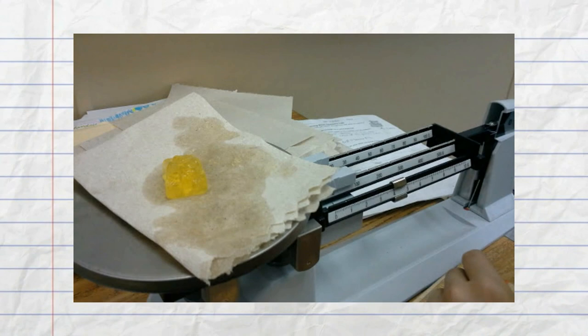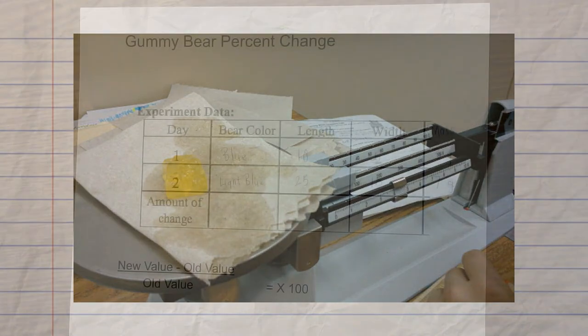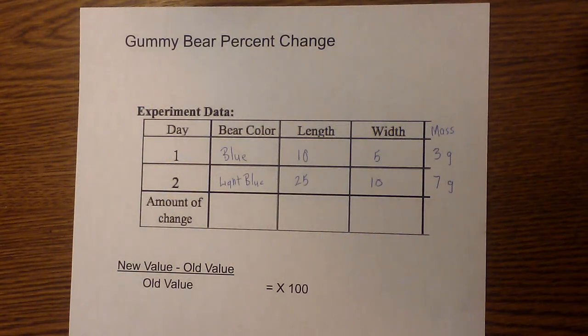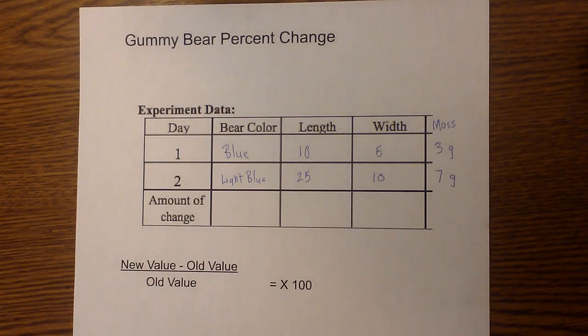You can use a triple beam balance or a scale to calculate the mass before and after and then apply that to the percentage change formula. Now let's go ahead and work some of the percentage change problems.